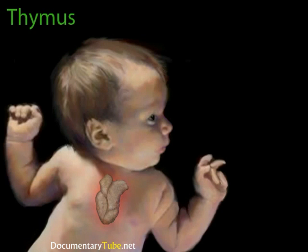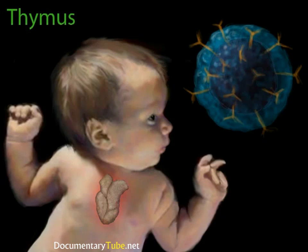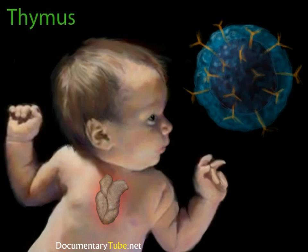What does the thymus gland do? Like many things in the human body, the scientific community is still rather puzzled by it. We know that while a person is young, immature lymphocytes known as T-lymphocytes leave the bone marrow and travel to the thymus. This remarkable maturation process is sometimes referred to as thymic education. T-lymphocytes that are beneficial to the immune system are spared, while T-lymphocytes that might evoke a detrimental immunological response are eliminated. For example, if you have type A blood, T-lymphocytes which attack the A antigen are destroyed, while those which attack the B antigen are allowed to mature and enter the bloodstream.